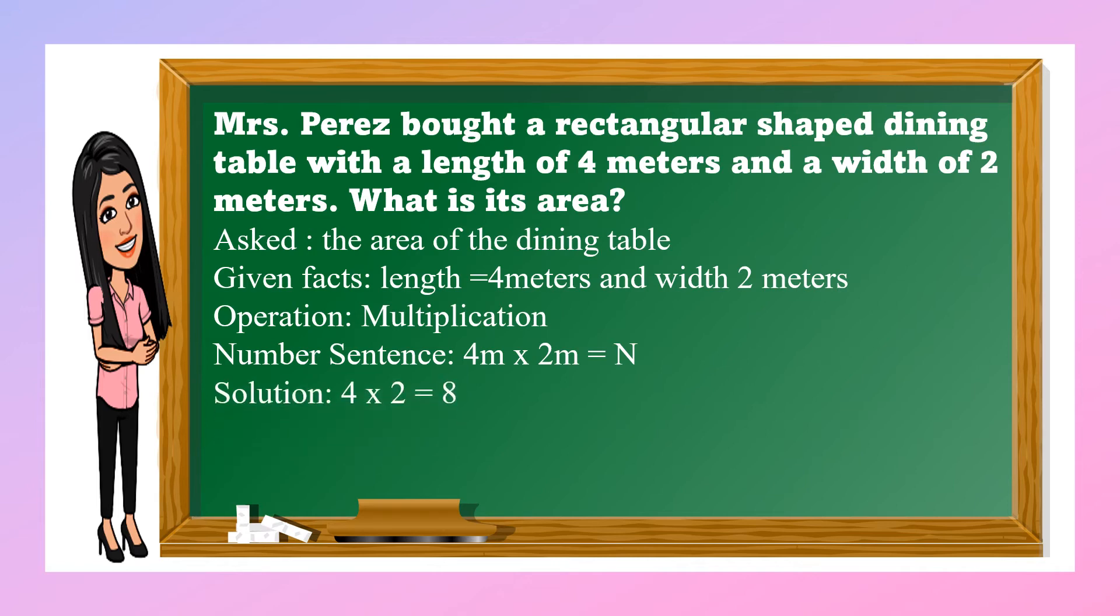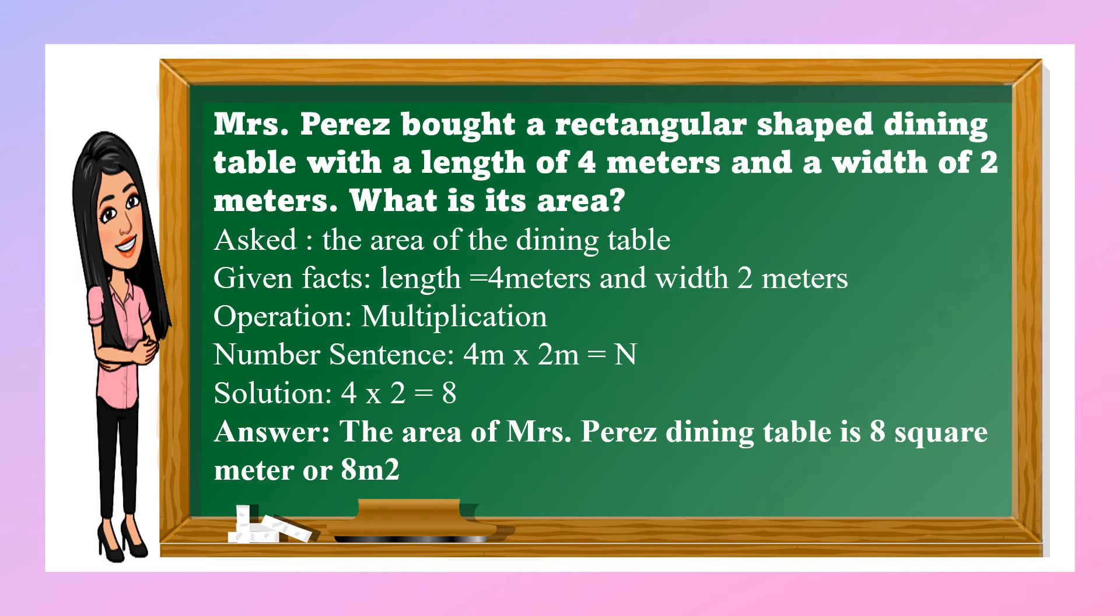Solution: 4 times 2 equals 8. So the answer is, the area of Mrs. Perris dining table is 8 square meters.